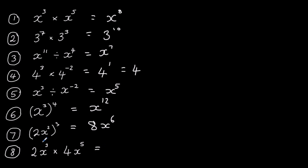Finally, we've got 2x squared cubed: 2x squared times 2x squared times 2x squared. 2 times 2 times 2 is 8, and 2 times 3 gives a power of 6, so that's 8x to the power of 6. And the last one: 2 times 4 makes 8, and 3 plus 5 makes 8, giving 8x to the power of 8.